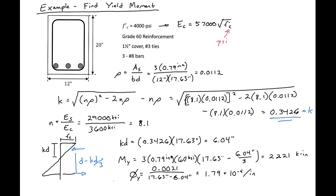And this gives us our approximate yield moment and our approximate yield curvature. And we can compare these to our more exact values using the actual curve, and they'll be very, very close.